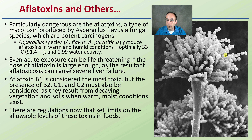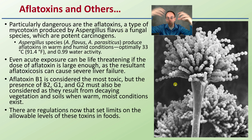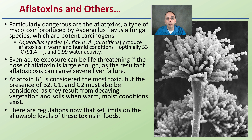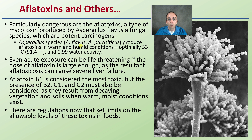Aspergillus has a highly branched appearance that allows its spores to break off very easily, get airborne, and be transported that way. It produces aflatoxins in warm and humid conditions, typically around 33 degrees Celsius (91.4 degrees Fahrenheit) and 0.99 water activity. Those are the ideal conditions, but it can, of course, produce these outside of those conditions.